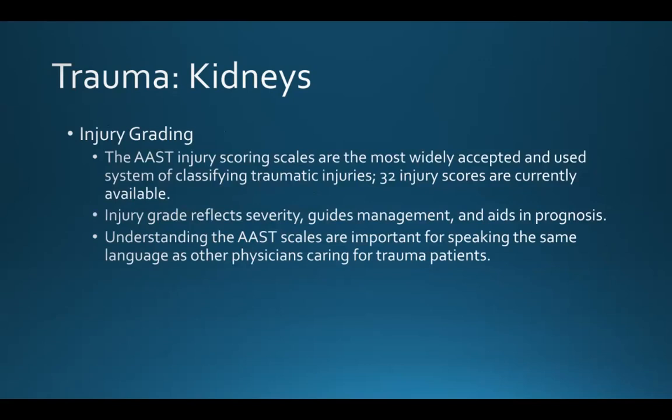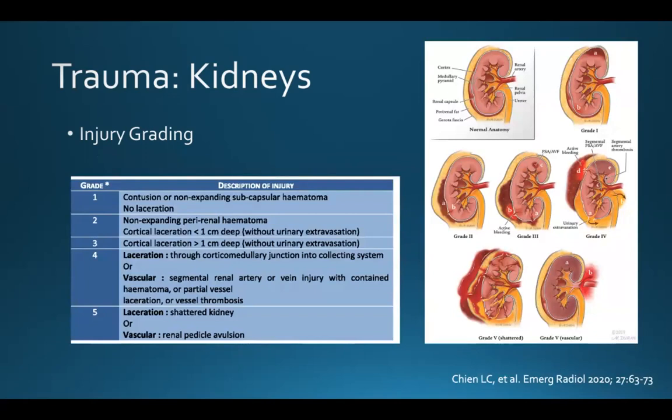Understanding the AAST scales is important so that we speak the same language as others caring for the trauma patient. There are five grades: Grade 1 is a contusion or non-expanding subcapsular hematoma without a laceration. Grade 2 is a non-expanding perirenal hematoma and/or a cortical laceration less than one centimeter deep without urinary extravasation. Grade 3 is a cortical laceration greater than one centimeter deep without urinary extravasation. Grade 4 is a laceration through the corticomedullary junction into the collecting system, or a segmental renal artery or vein injury with a contained hematoma, partial vessel laceration, or vessel thrombosis. Grade 5 is a shattered kidney or avulsion of the renal pedicle.